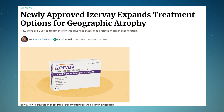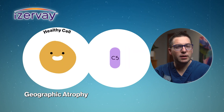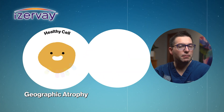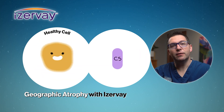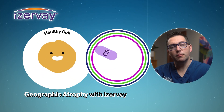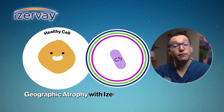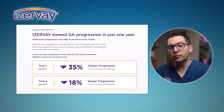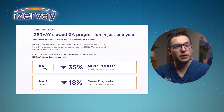Izervay also targets the complement system, but works in a slightly different way. Izervay inhibits a protein called C5, which is also part of the complement pathway. By blocking C5, Izervay can prevent the activation of the complement cascade, thereby protecting cells in the macula from damage. Studies have also shown that Izervay can slow down the progression of GA and help maintain vision. Izervay is given as an injection into the eye, similar to Syfovre.